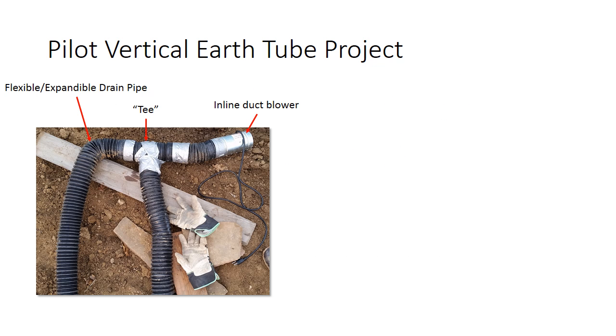Here's a quick description of the pilot system I had. It's not pretty, but it's just a test system. I drilled two holes and I've got an inline duct blower that blows air into a four-inch tube. Nice little device, 90 cubic feet per minute, 12 watts. I've teed it off to go down into two different wells using expandable drain pipe from Home Depot.